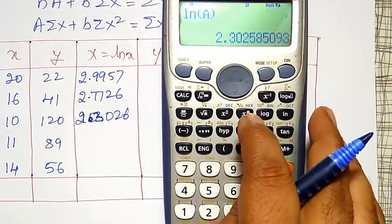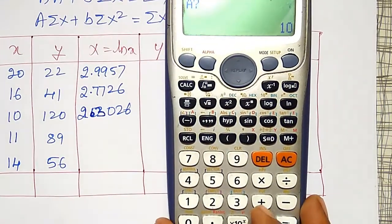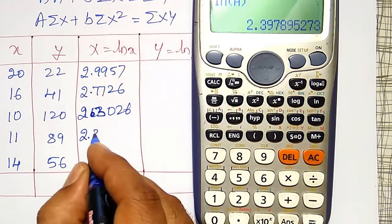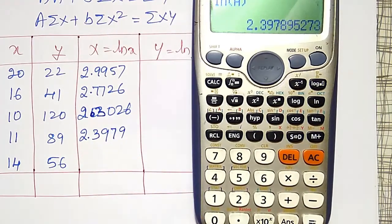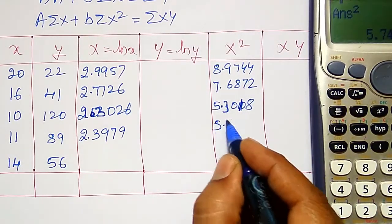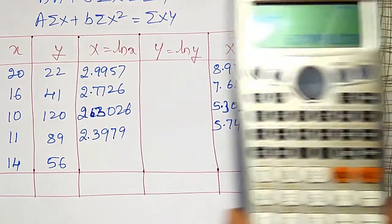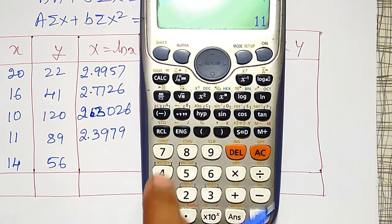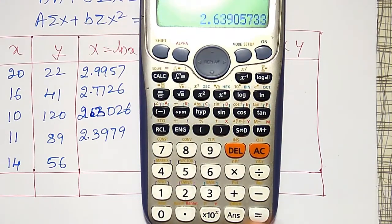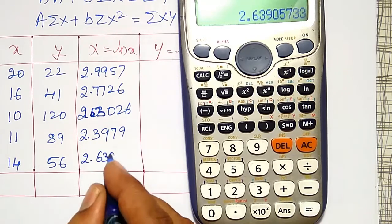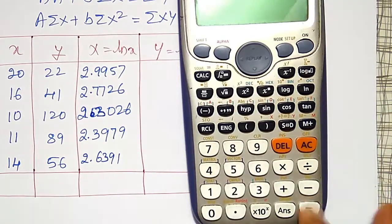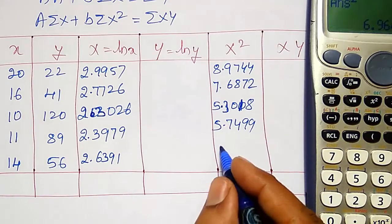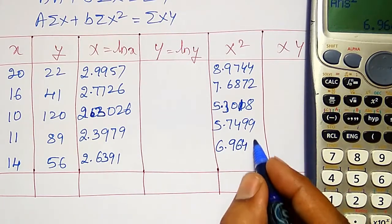For x = 11: ln(11) = 2.3979 and its square = 5.7499. For x = 14: ln(14) = 2.6391 and its square = 6.9646. That completes the capital X column calculations.